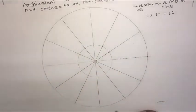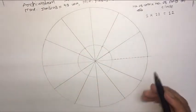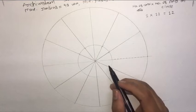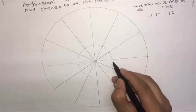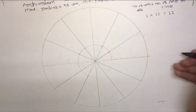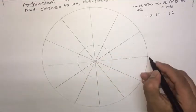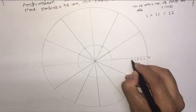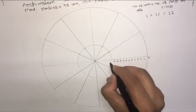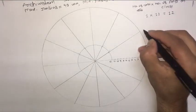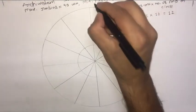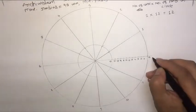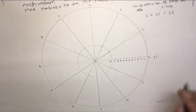Now depending on the clockwise or anti-clockwise rotation as asked in the problem, you can give numbering. If you want to go for clockwise rotation, you can start numbering from this side. If in anti-clockwise direction, start drawing from right to left. So I will mark: 0, 1, 2, 3 — and on the circle I will also mark the numbers just for reference.